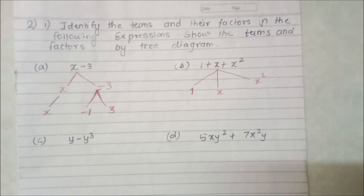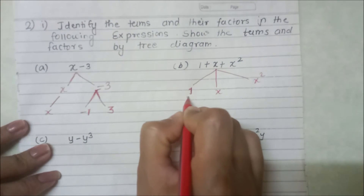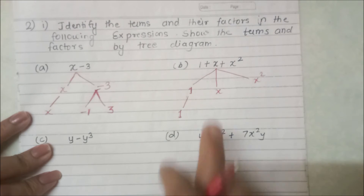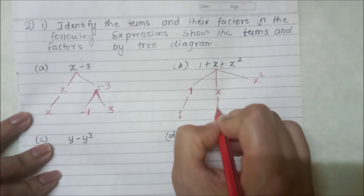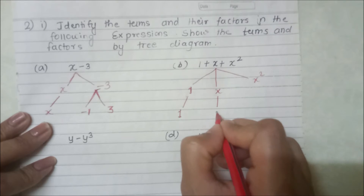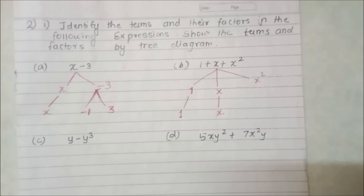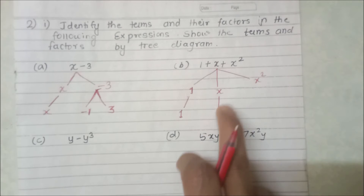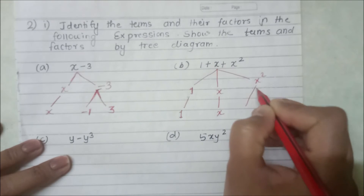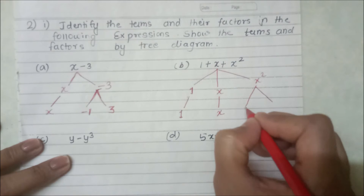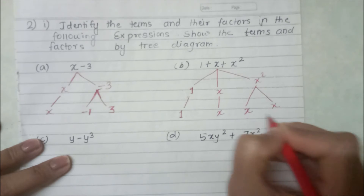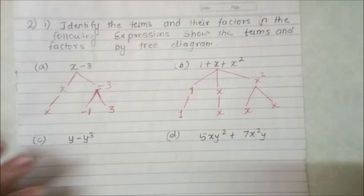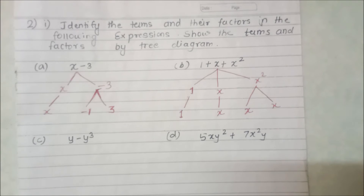For the factor of x, since 1 times x equals x, we do not write 1 as a separate factor — so x is its own factor. For x square, the factors are x and x, because x into x equals x square. So x square has two factors: x and x.